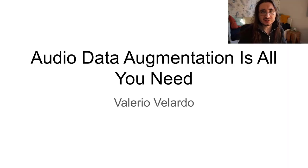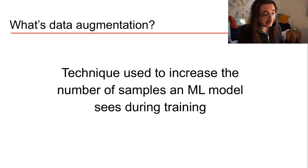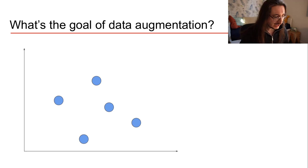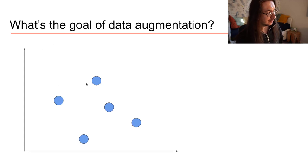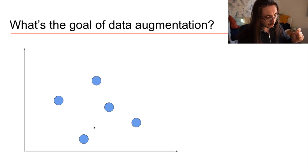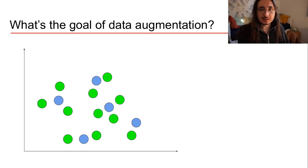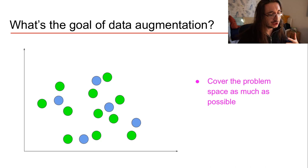In this first video you'll learn why audio data augmentation is important and what it is, but we'll start from data augmentation more generally. So what's data augmentation? It is a technique used to increase the number of samples a machine learning model sees during training. The goal is to cover more of your problem space — this two-dimensional space here — where the blue dots are your samples. By augmenting data, by creating samples derived from the originals, you add more points that cover more of your problem space.